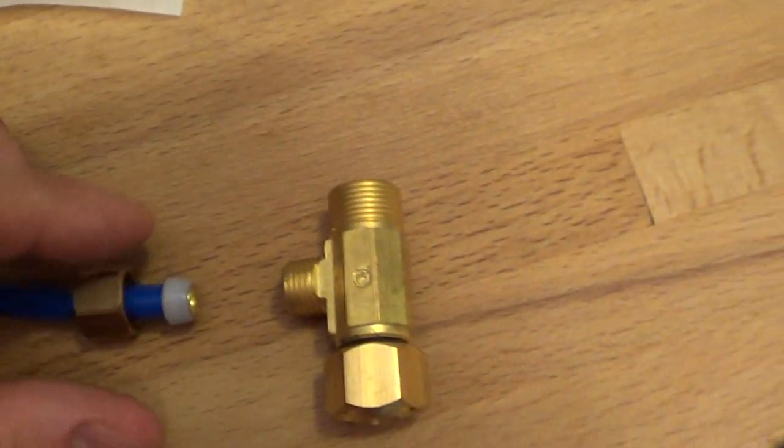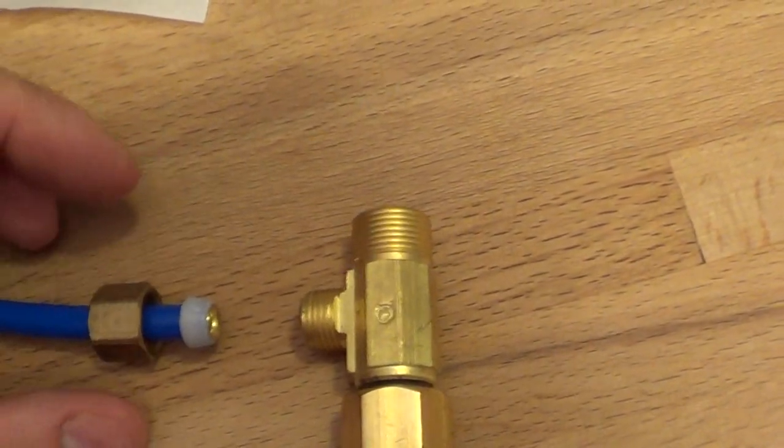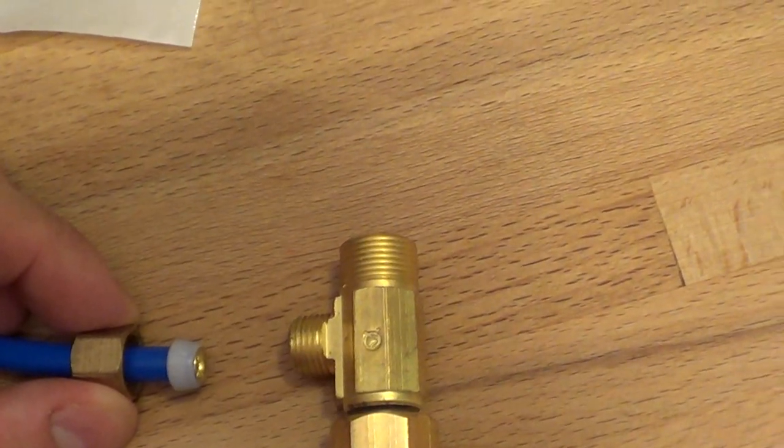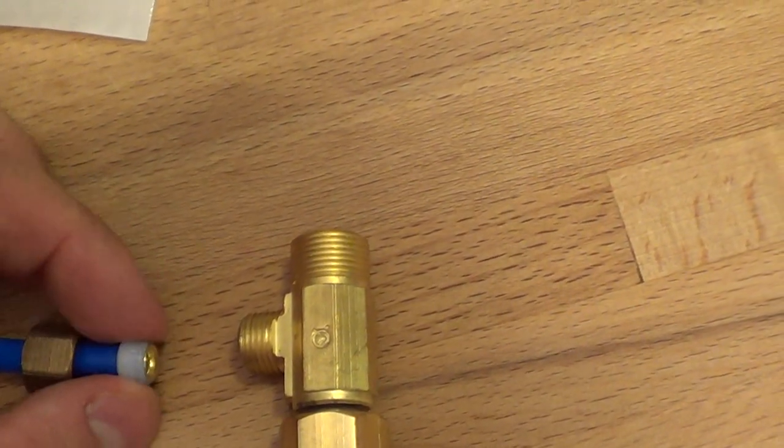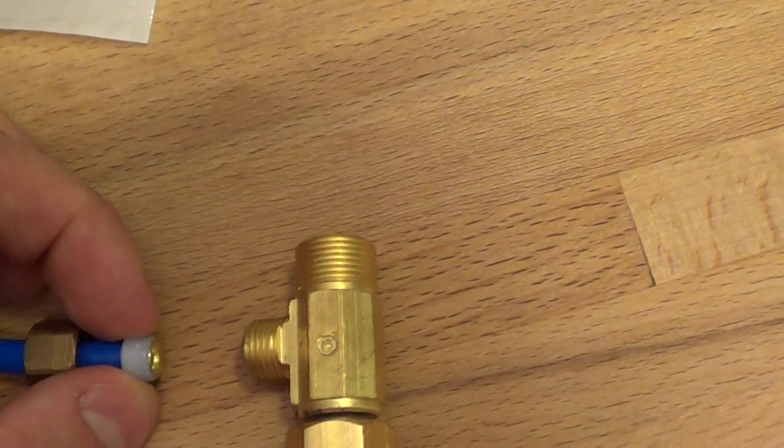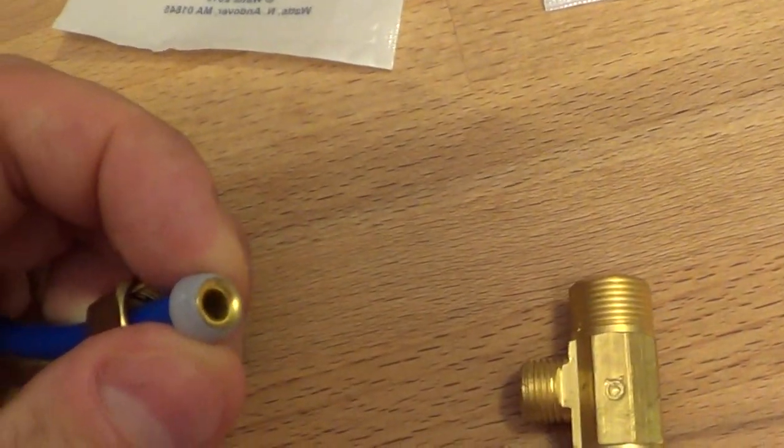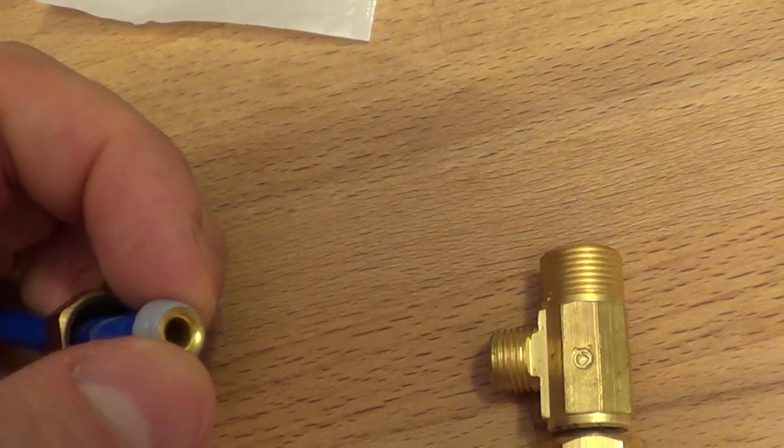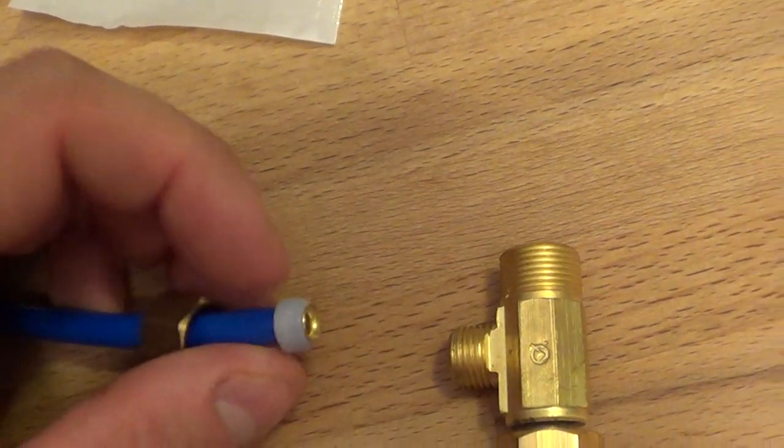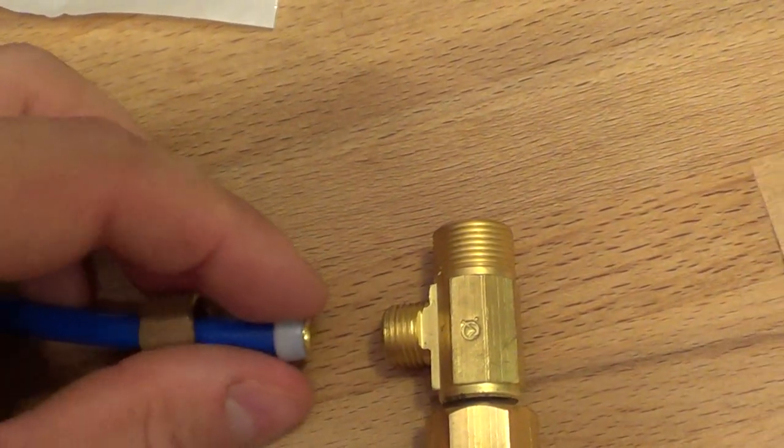Again, this is quarter inch line, and what we have here is a compression nut, and that needs to have a sleeve on it, which is kind of two parts here. There's the part that goes inside the tube, and then there's the part that kind of goes on the outside of the tube.